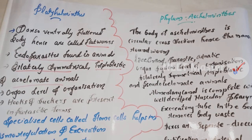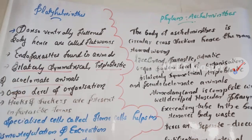Platyhelminthes show organ level of organization — higher than the cellular level seen in Porifera and tissue level seen in Coelenterata. Hooks and suckers are present in parasitic forms to help them attach to the host.